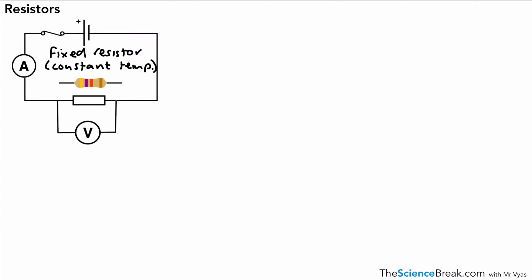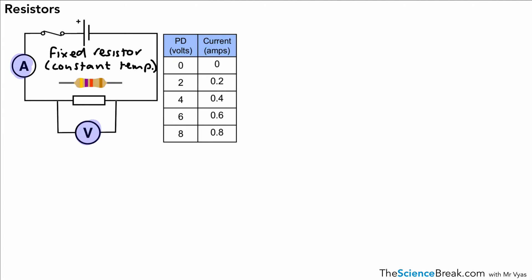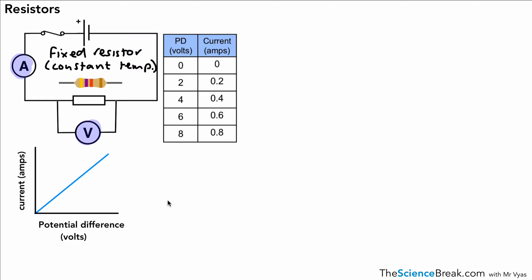This is as long as we have a constant temperature for this resistor. Here, potential difference is measured by a voltmeter and current by an ammeter. If we put in some values for potential difference going from 0 to 8, we see the current change. The sketch graph shows that as we increase potential difference, current increases in a straight line. We describe this resistor as an ohmic conductor — it has a fixed value at a constant temperature.